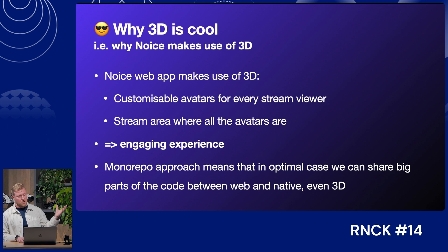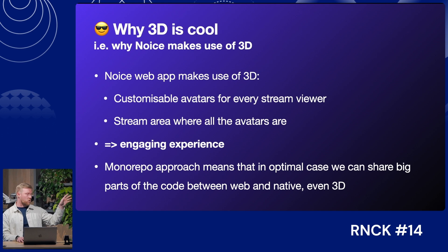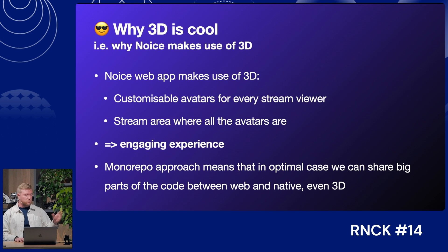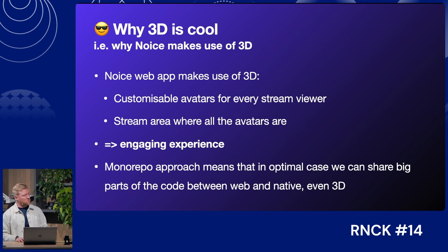Noise makes very big use of 3D — for example the avatars are customizable, you can buy clothes for them and customize them in every way. We also have the stream area where you basically watch with other stream viewers. All of that runs in the browser very nicely. But how do you get the same engaging experience in a mobile view? Noise is actually not just one thing — it's four different clients: one for streamers, one for watchers, and so on, with a big monorepo codebase.